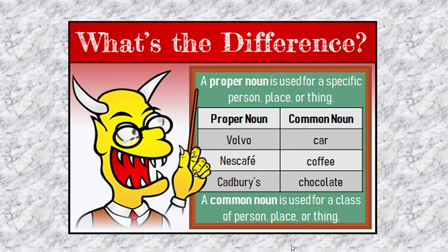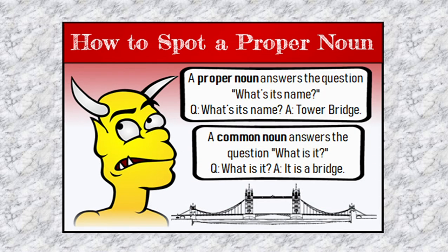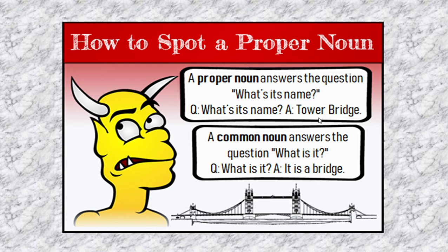So we can say a common noun is used for a class of person, place or thing — any category. But when you provide a particular name to it, it becomes a proper noun. Always remember, proper noun answers the question 'What is its name?' And common noun answers the question 'What is it?' For example, when you say 'What is it?' and you answer 'It is a bridge,' the word bridge is your common noun. And when you ask 'What's its name?' — Tower Bridge — so these two words, Tower Bridge, are your proper nouns.